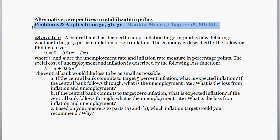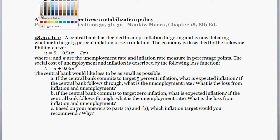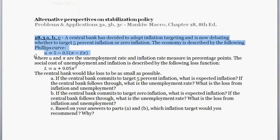This problem is borrowed from MNQ Macroeconomics, from the chapter on alternative perspectives on stabilization policy — problem applications, question three. The question asks: a central bank has decided to adopt inflation targeting and is now debating whether to target five percent inflation or zero inflation. The economy is described by the following Phillips curve.